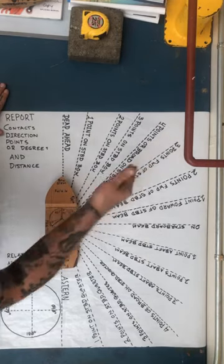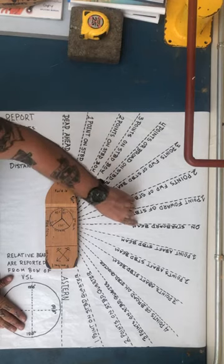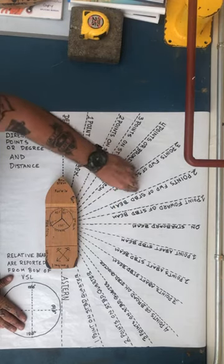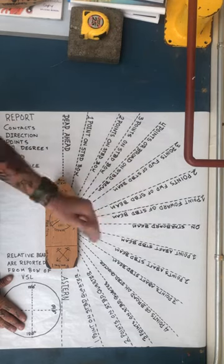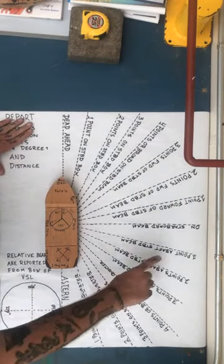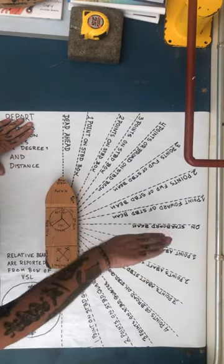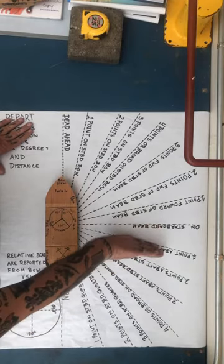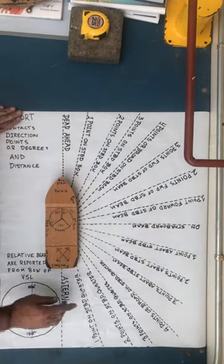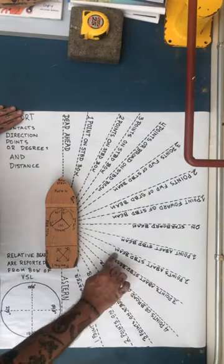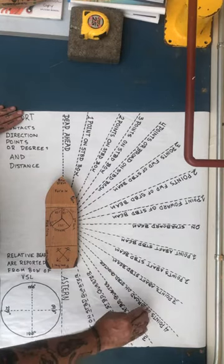Three points forward of the starboard beam, right? So if this is starboard beam, we're three points forward of that, two points forward of that, one point forward, a vessel obviously on our starboard beam. Then we go with the abaft, right? So abaft or after of the beam, one point abaft of the starboard beam, two points abaft of the starboard beam, three points abaft of the starboard beam, or four points or broad on the starboard quarter.